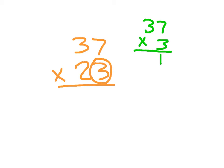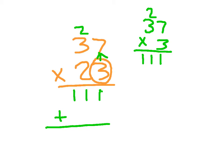37 times 3 — if I write it over here — 3 times 7 is 21: write the 1, regroup the 2. For the double-digit multiplication problem, we write them all together. 3 times 3 is 9 plus 2 is 11, and we write that right there.